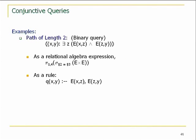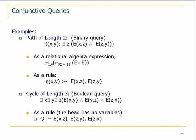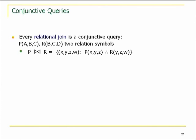Let's look at some examples. Path of length 2 — all pairs connected by a path of length 2. In calculus you write: there exists z, E(x,z) and E(z,y). As an algebra expression and as a rule, the existential quantification over z is suppressed because z occurs in the body but not in the head. Similarly, a cycle of length 3 is a Boolean query: there exists x, y, z such that E(x,z) and E(z,y) and E(y,x). It's perfectly fine to have heads with no variables, meaning all variables in the body are existentially quantified.